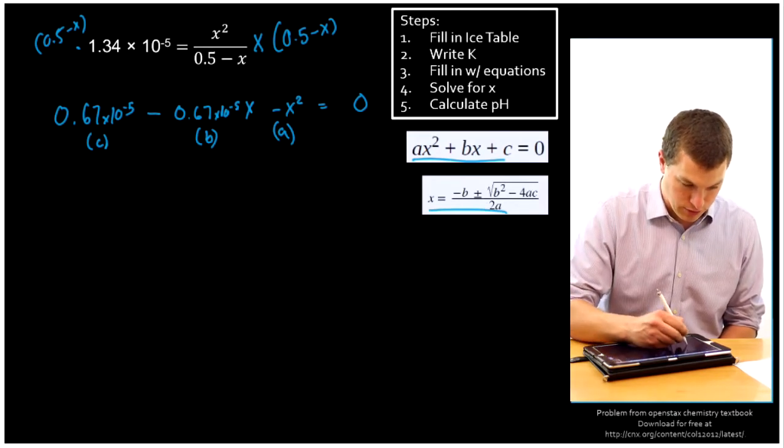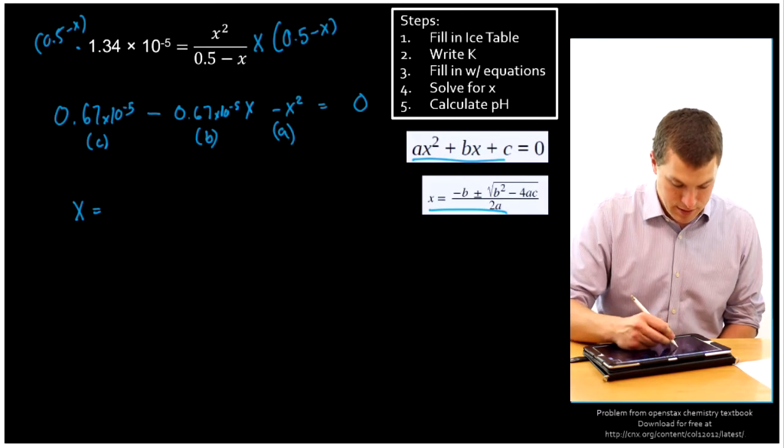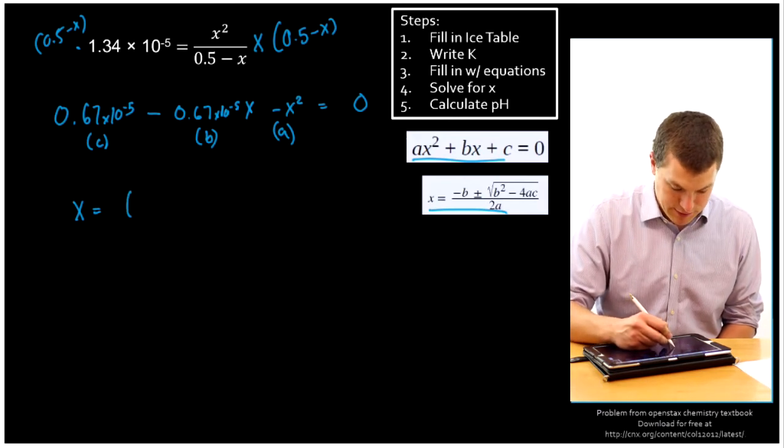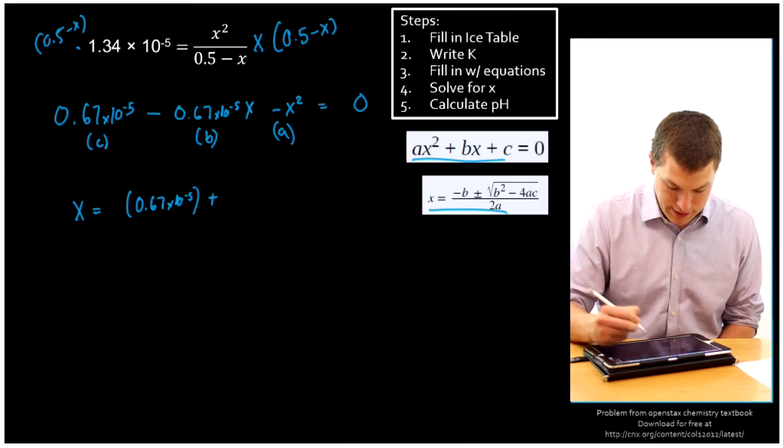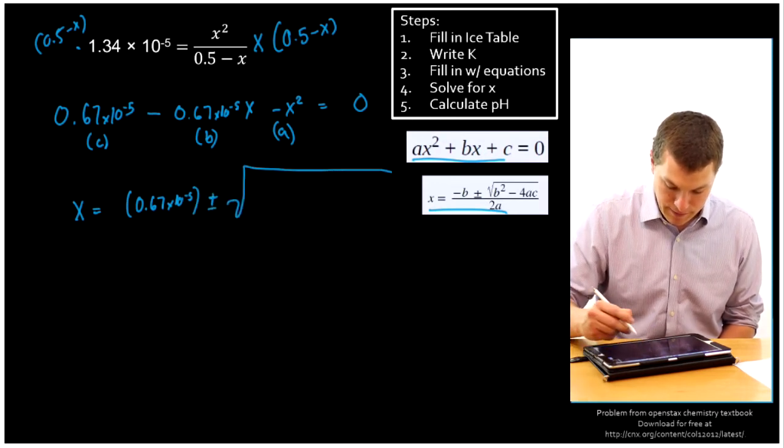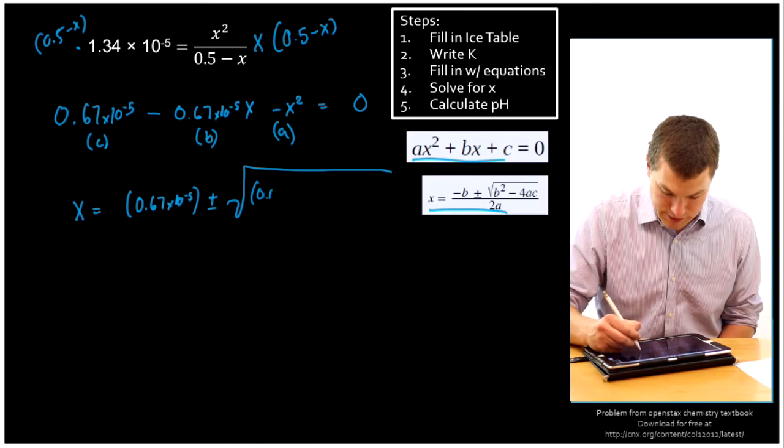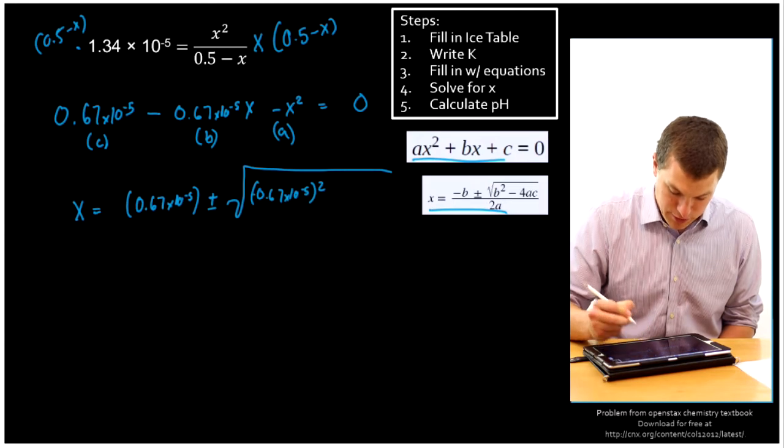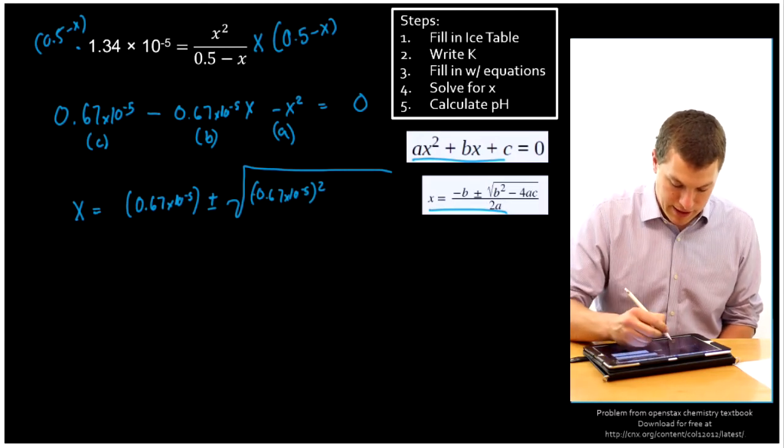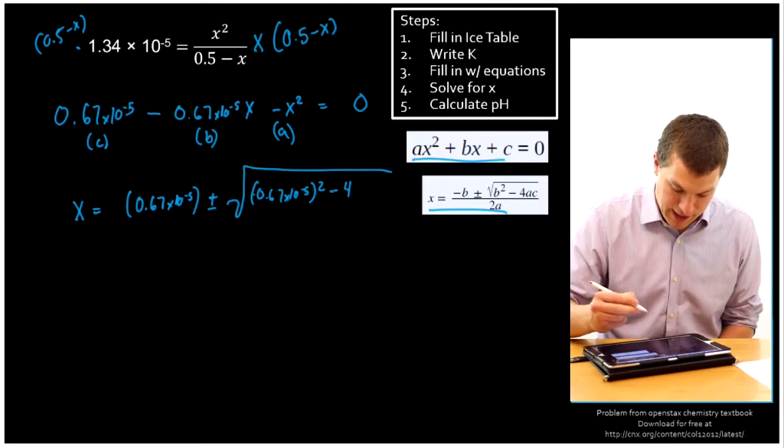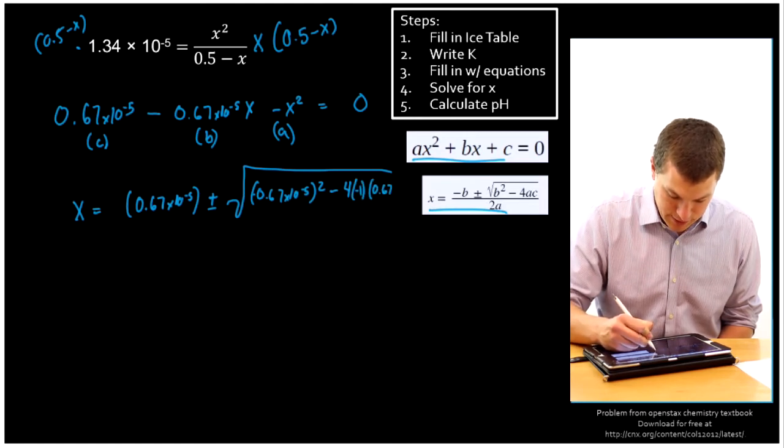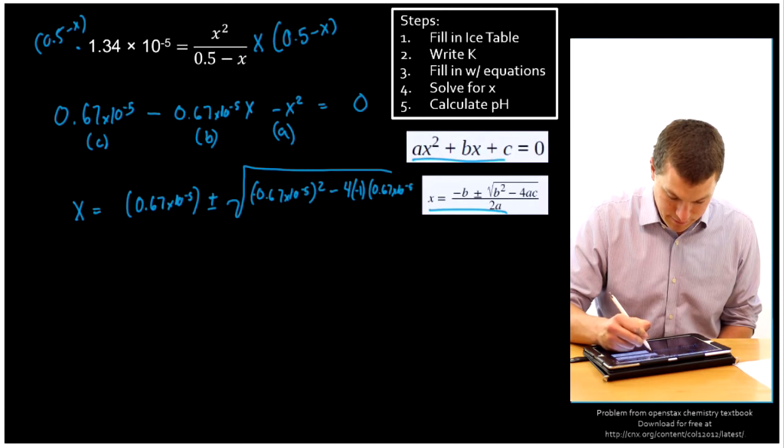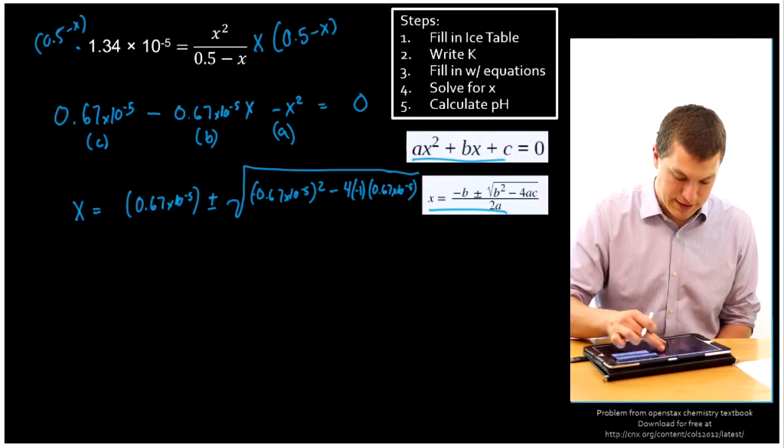So X is going to be equal to, negative B, which is 0.67 times 10 to the minus 5, plus or minus square root, B squared, which is 0.67 times 10 to the minus 5 squared. There's technically a negative sign in there, but it'll go away when we square it. Minus 4 times A, which is negative 1, times C, which is once again our 0.67 times 10 to the minus 5. And that's a positive term there.